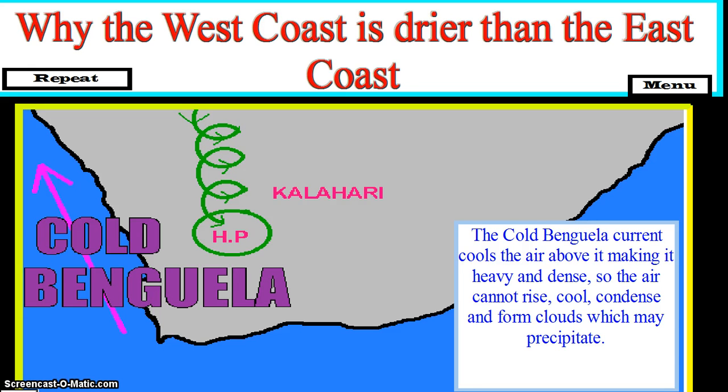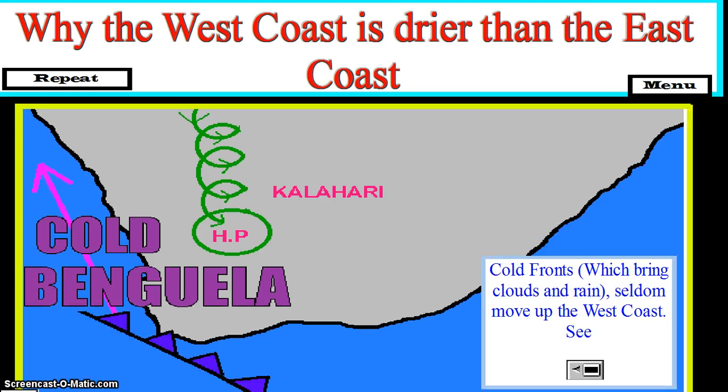Cold fronts, which bring clouds and rain, seldom move up the west coast, which may precipitate dry conditions along that coastline.